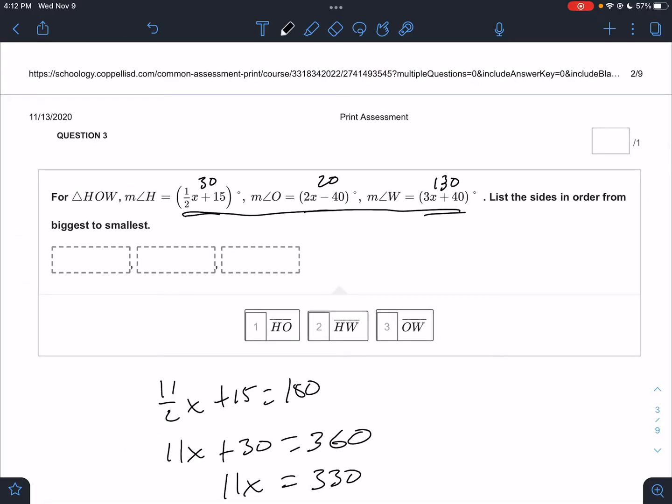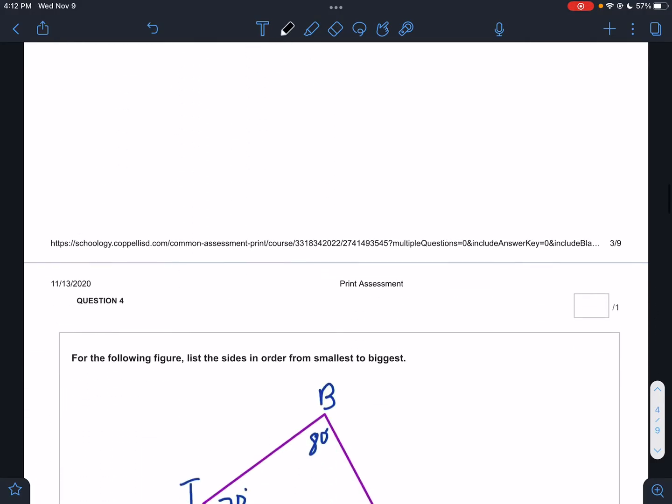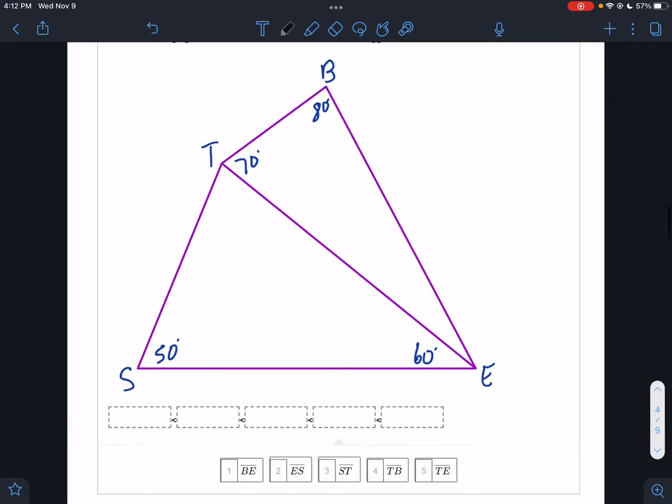It says list the sides from biggest to smallest. If W is the biggest angle, then HO is the biggest side. H is the next biggest, so OW is the next biggest, leaving us with HW. That's the order. The biggest angle produces the biggest side.